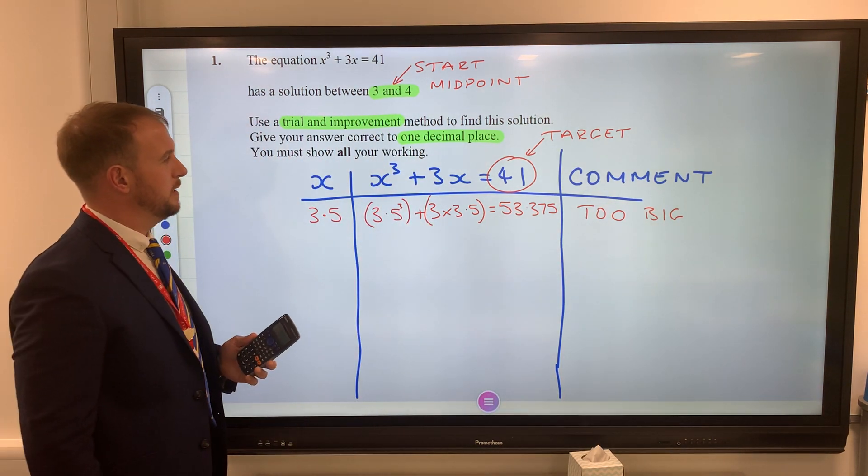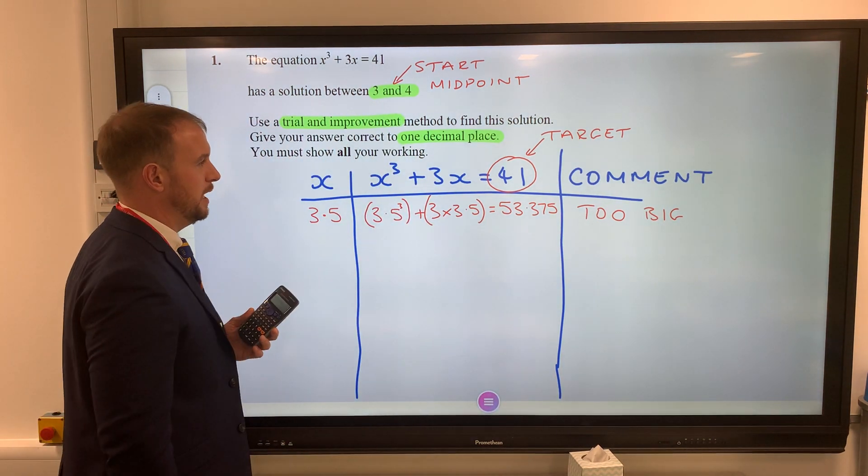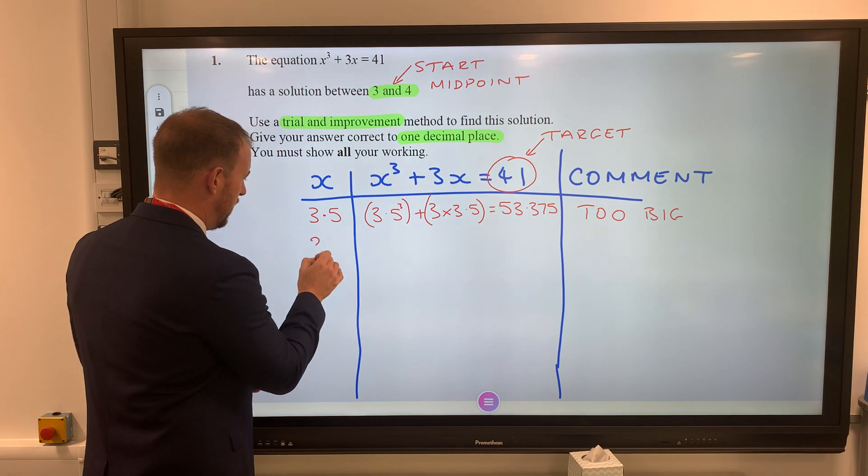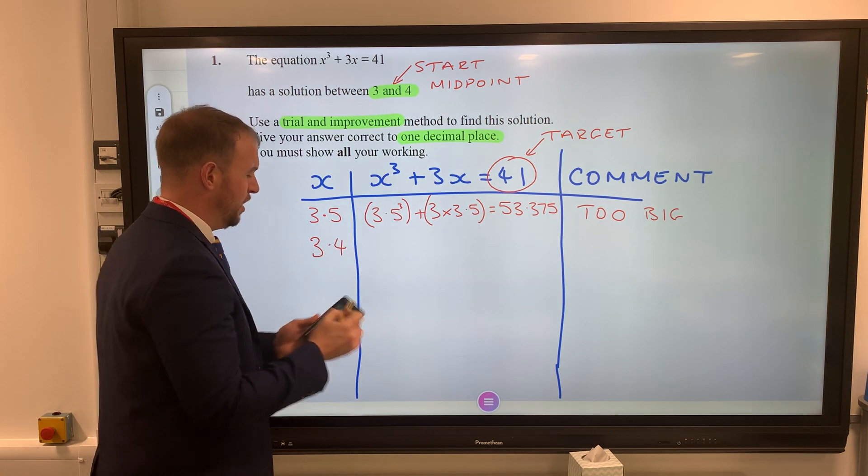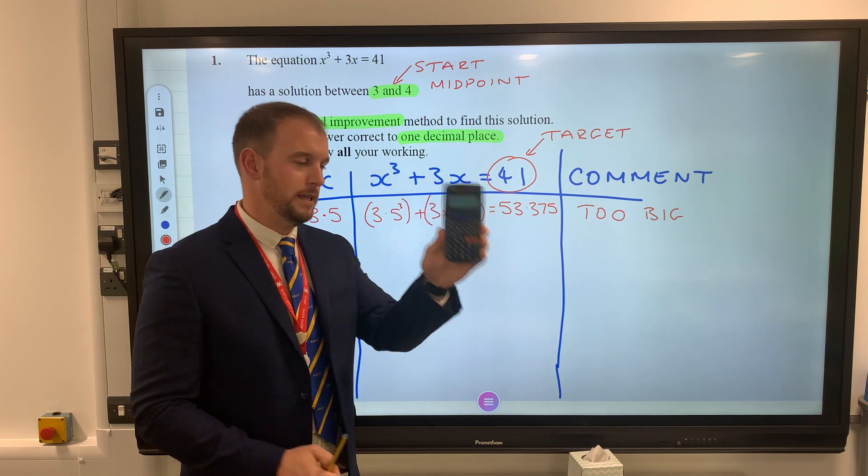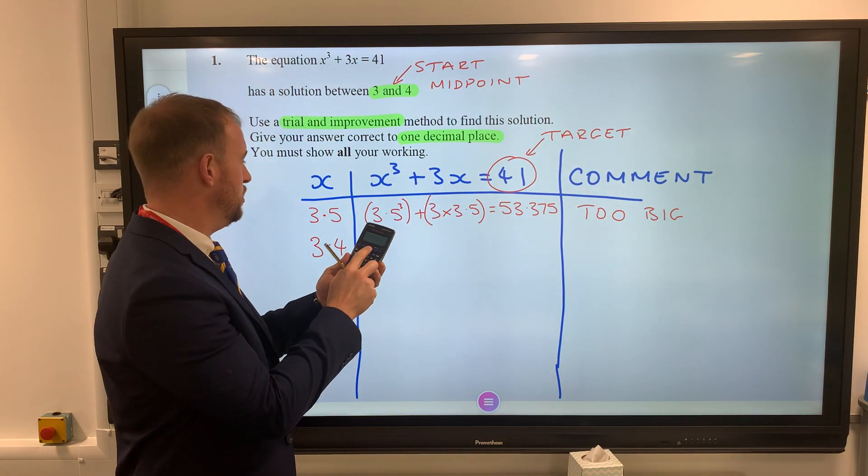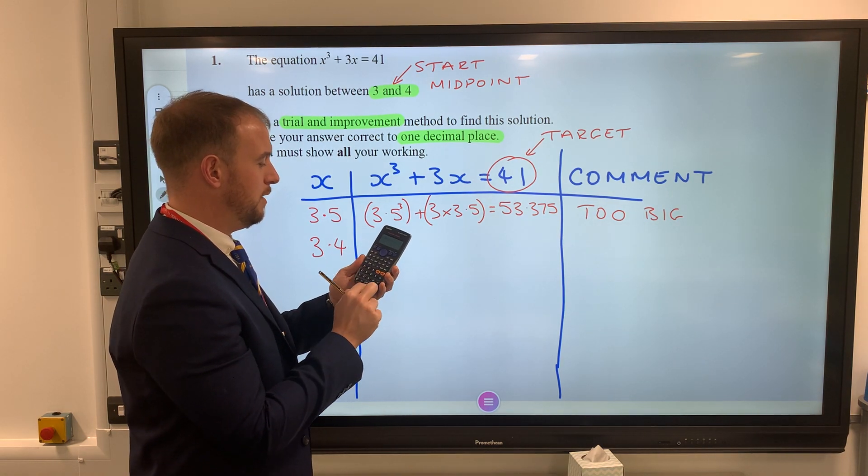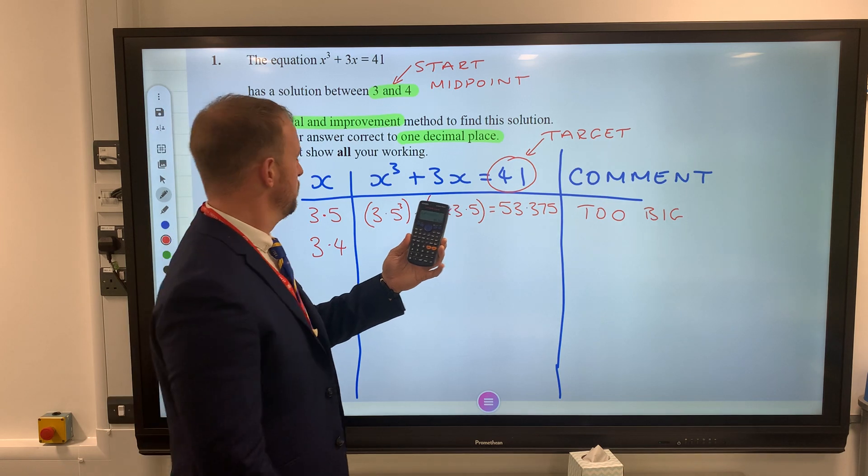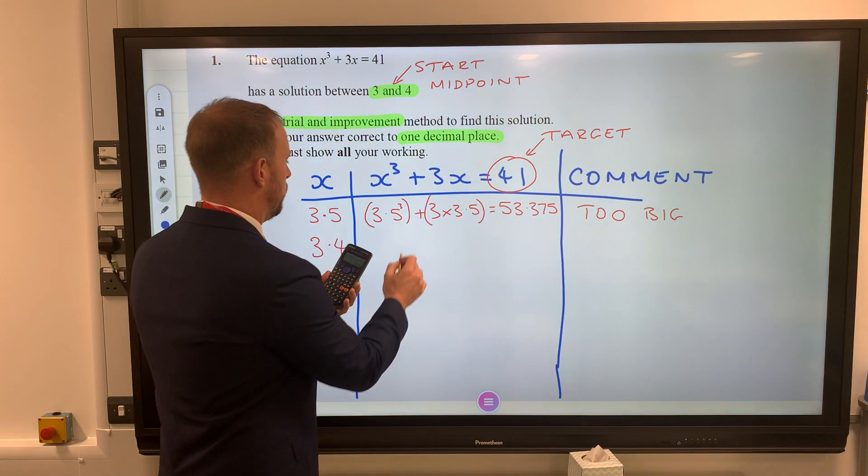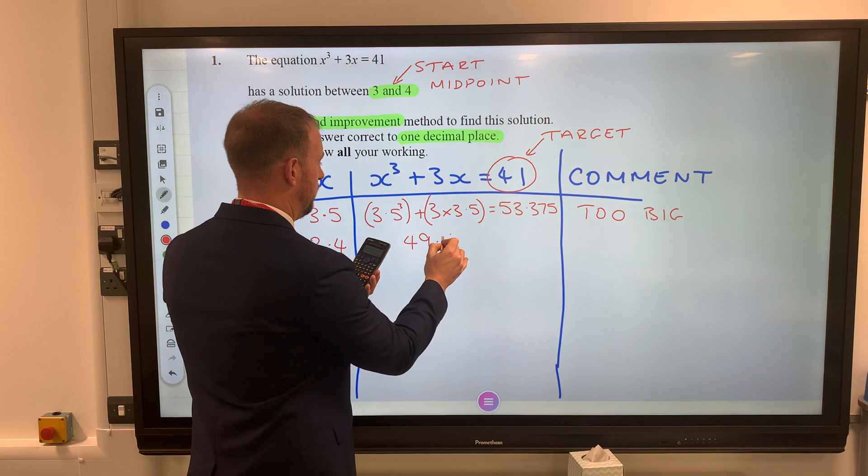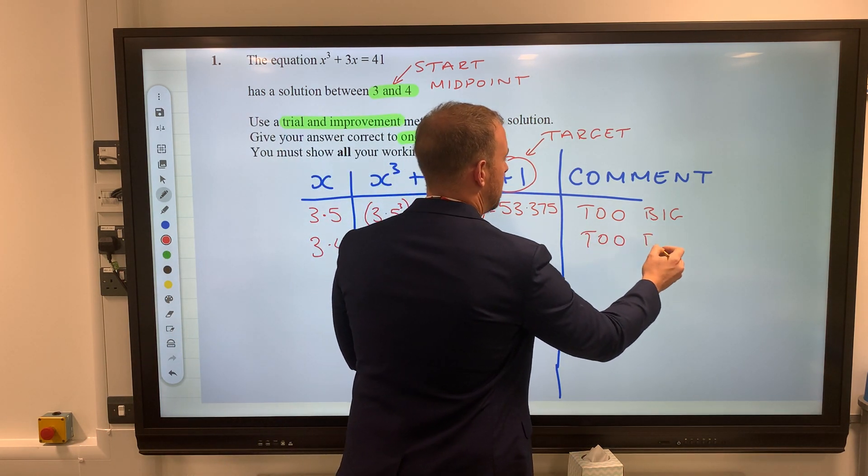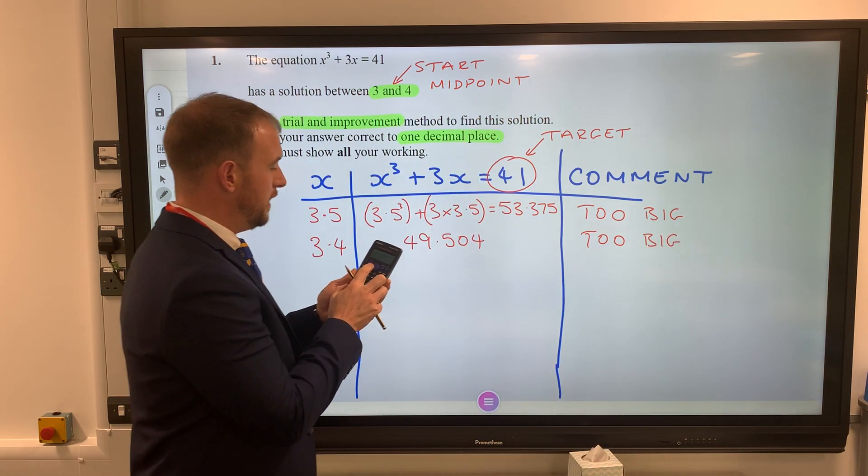We're going to give our answer to one decimal place, so we're going to follow this process to see how close we can get. If 3.5 is too big, let's try 3.4. Don't delete everything on the screen and write it out again - that's a waste of time. Just press back and change the 3.5 for 3.4. When x is 3.4, our answer would be 49.504. As we're aiming for 41, this again is too big.